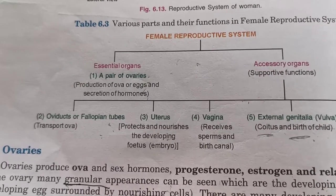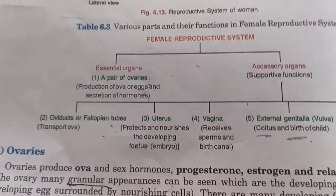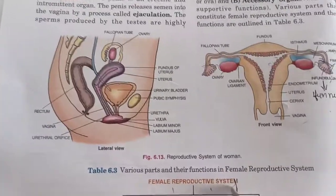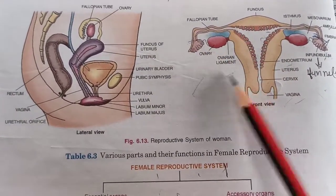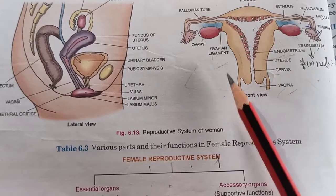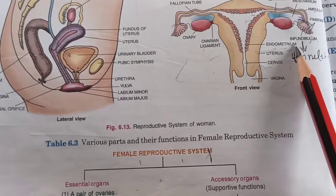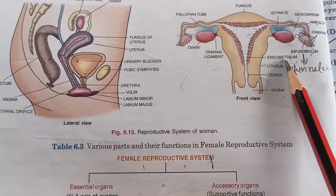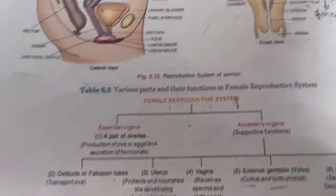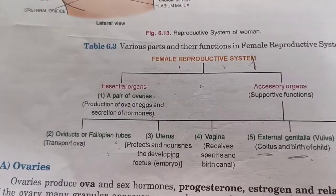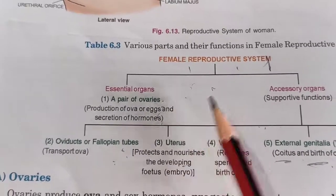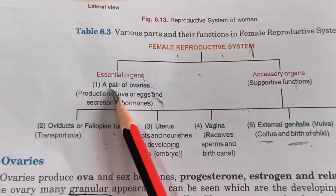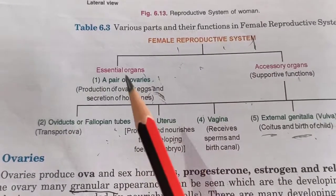In this lecture, we are going to study the female reproductive system. The female reproductive system is divided into two parts: one is essential and the other one is accessory. Essential is the main part.